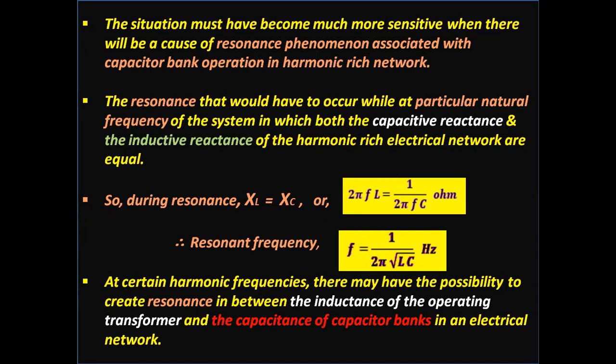The situation becomes much more sensitive when there is a resonance phenomenon associated with capacitor bank operation in a harmonic-rich network. Resonance occurs at the particular natural frequency of the system at which both the capacitive reactance and the inductive reactance of the harmonic-rich electrical network are equal — that is XL = XC — or resonance frequency f = 1/(2π√LC) hertz.